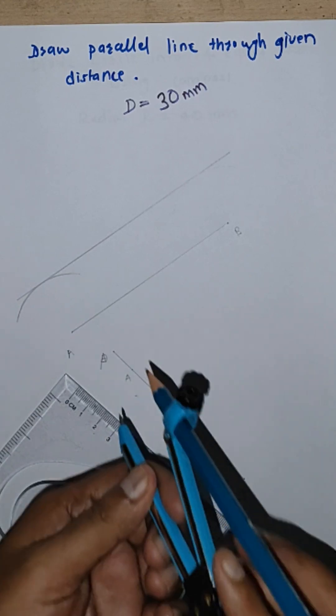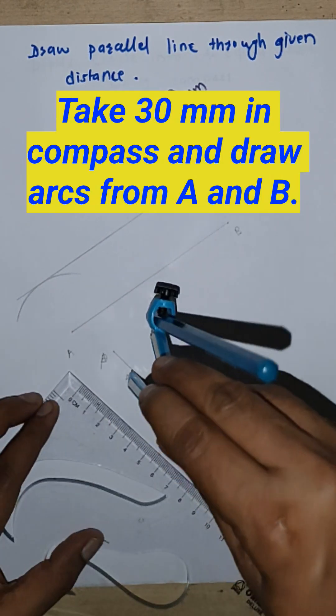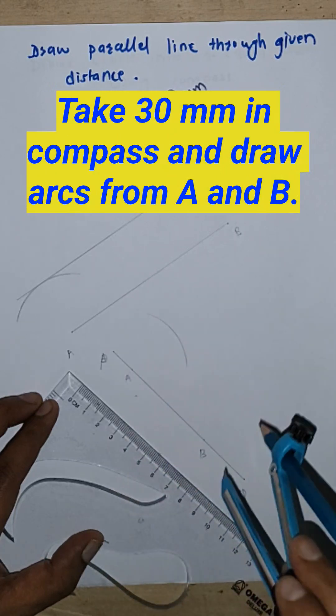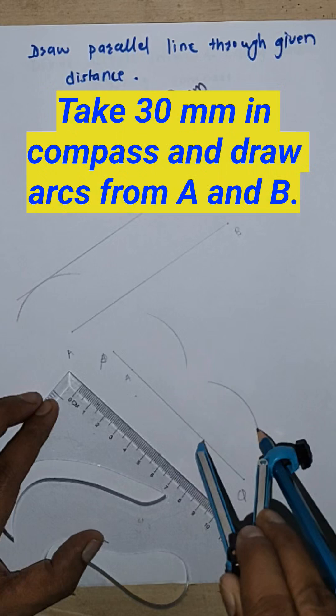Same procedure. Take 30 mm distance in compass, draw arc from A and draw arc from B.